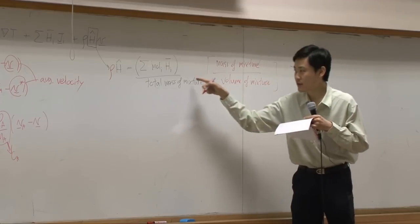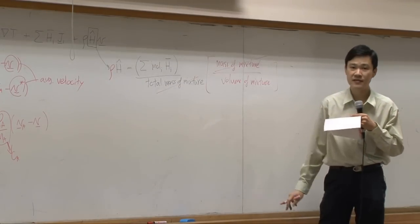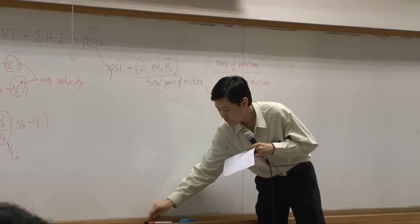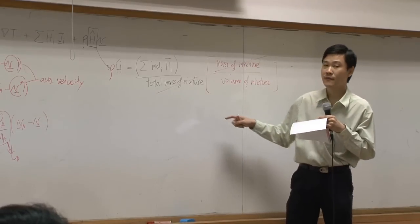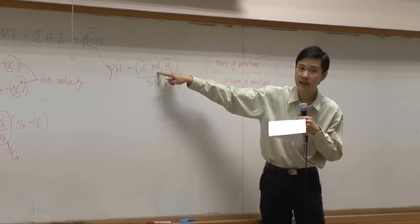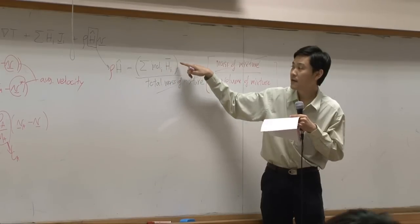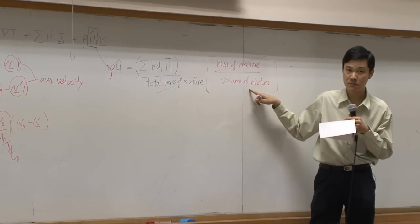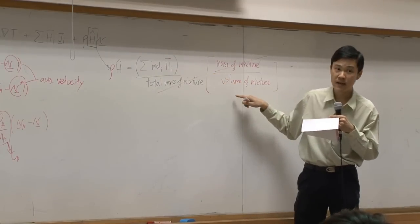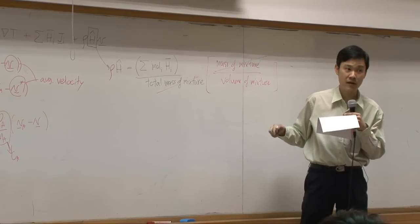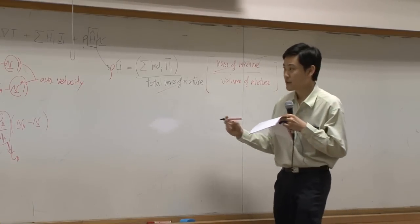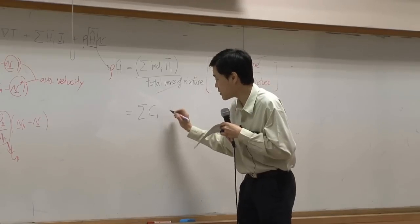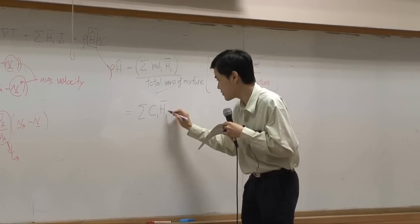So mass of the mixture and total mass of the mixture — indeed they are the same, they cancel out. So you will have summation of moles of each species multiplied by partial molar enthalpy divided by volume. Moles per volume is molar concentration, so this gives you molar concentration of i times h-bar i.